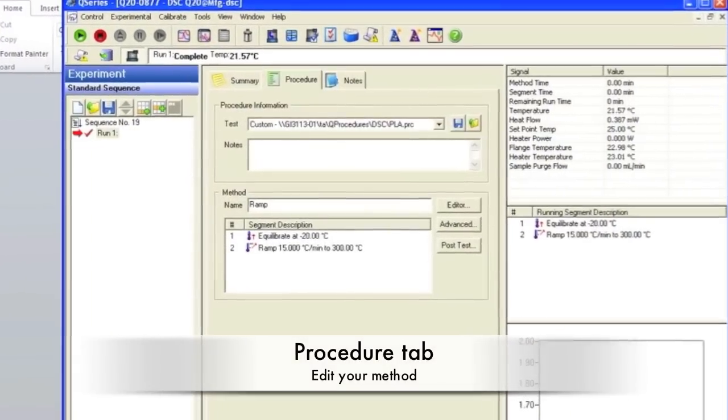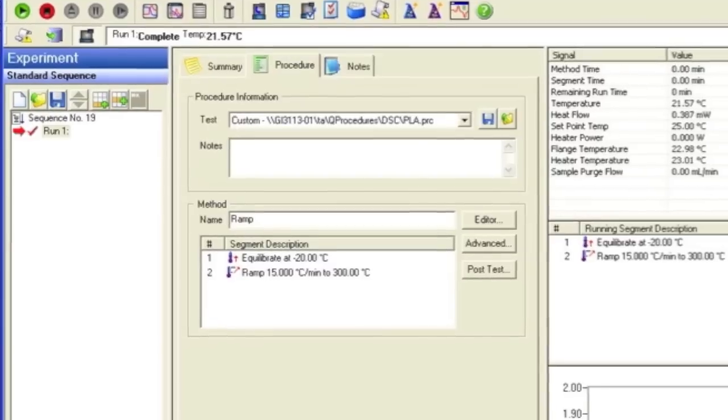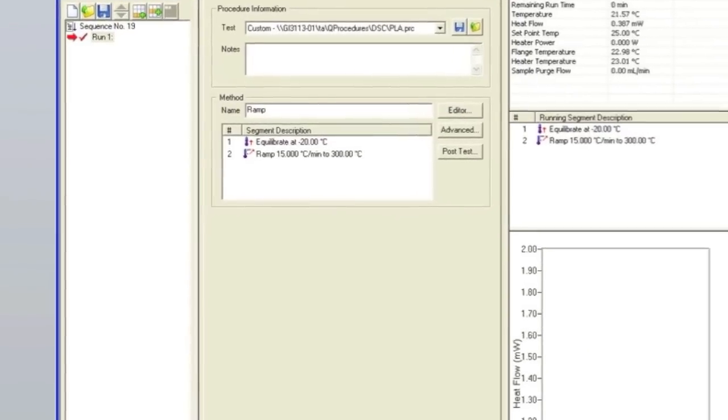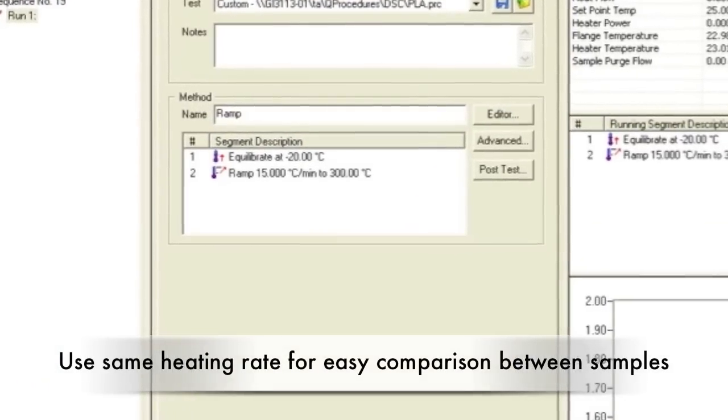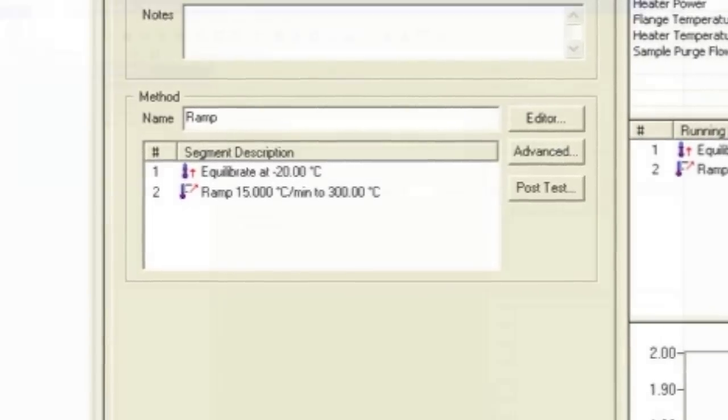In the Procedure tab, edit the method for your experiment. Most tests have an equilibrate step at room temperature, followed by a ramp to a certain temperature at a certain rate. The maximum temperature for the Q20 is 500 degrees Celsius. A variety of heating rates as high as 30 K per minute can be used. And isothermal steps can be added depending on the type of test.